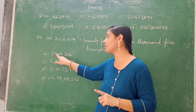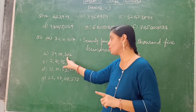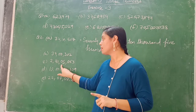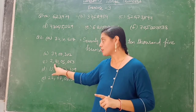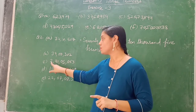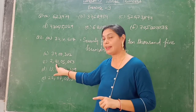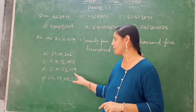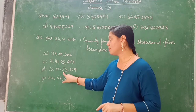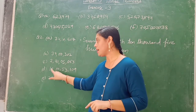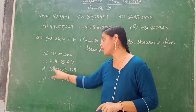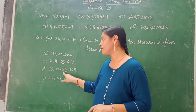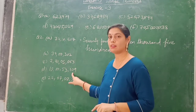What you will write is 39,302. Same thing: ones period, thousands period, lakh period, and crore period. So 2 crore, 41,05,063. Then this one: ones, thousands, lakhs, crores — so 10 crore, 53,109.